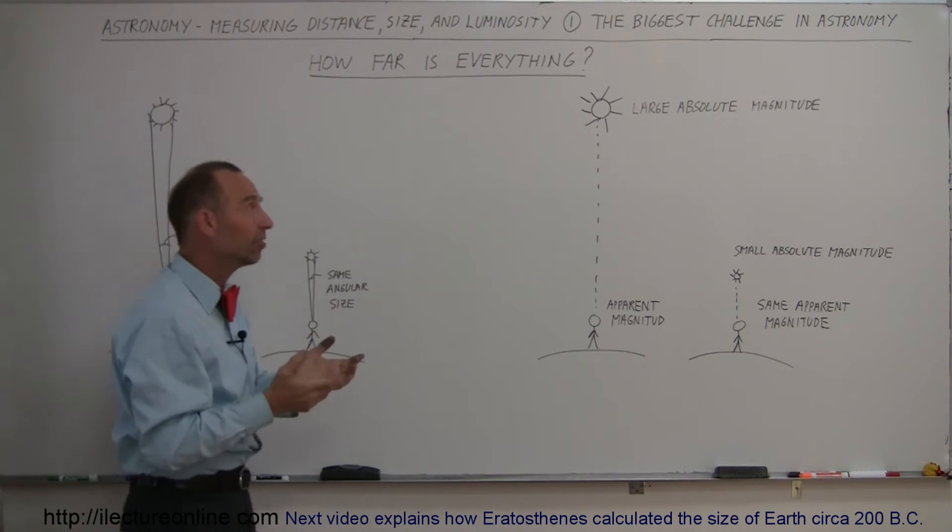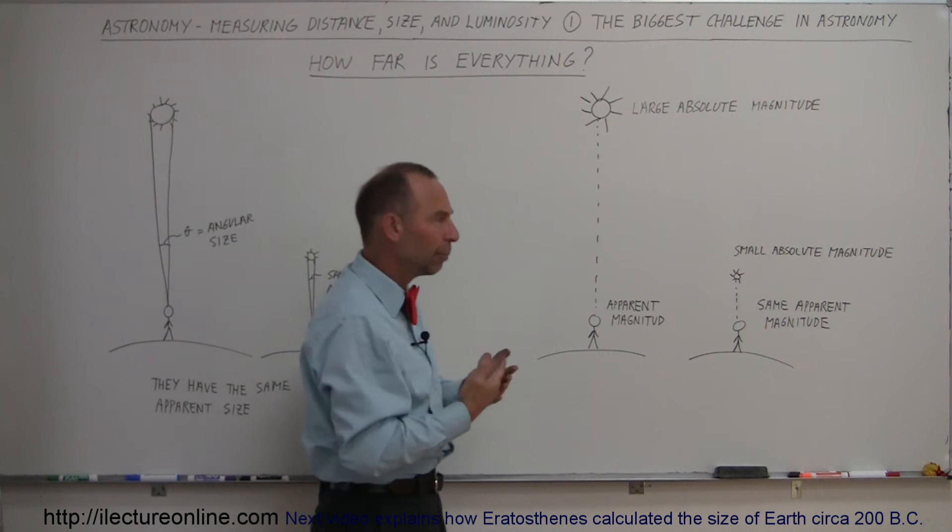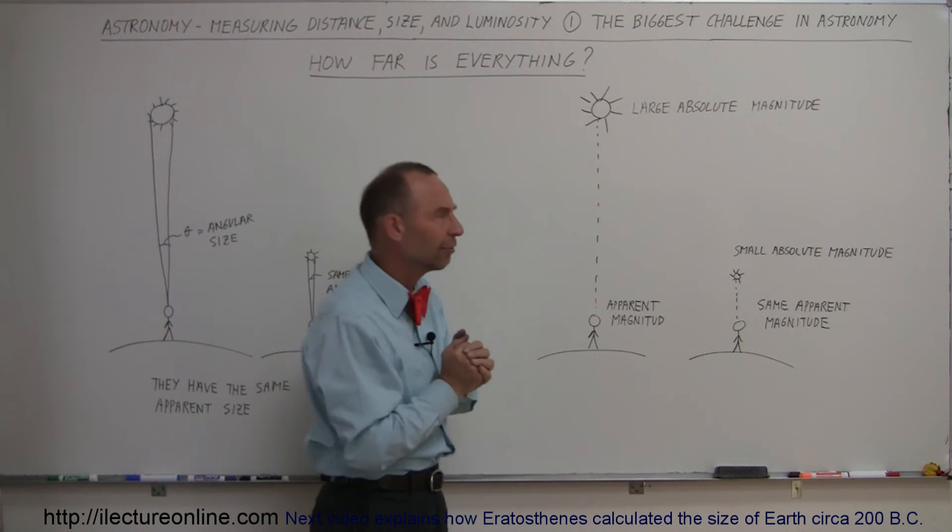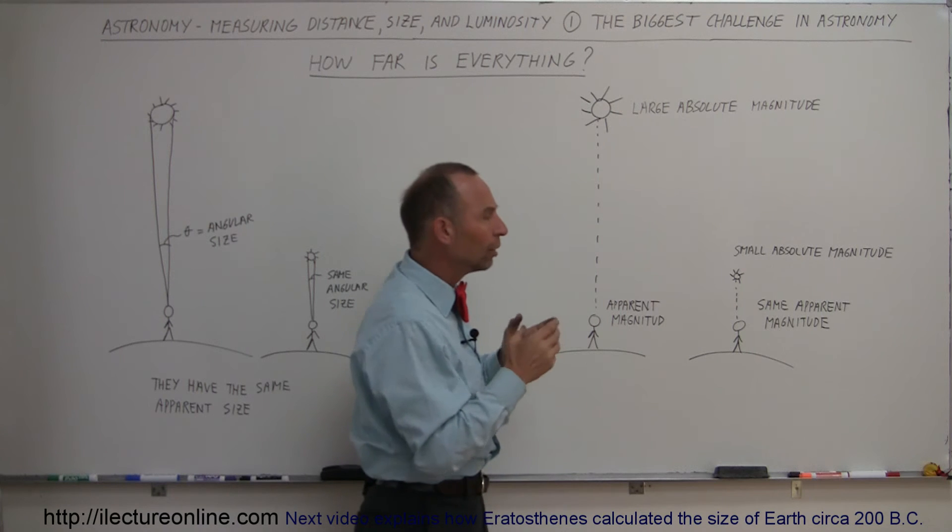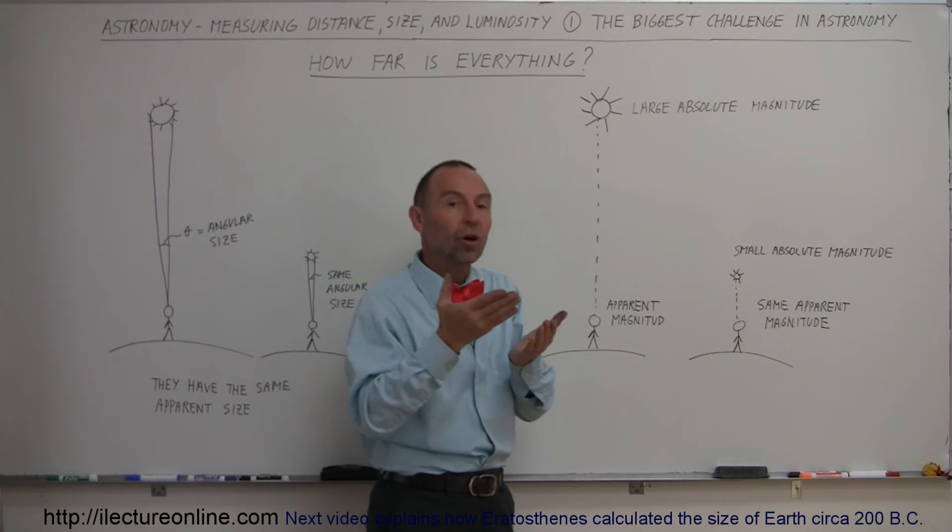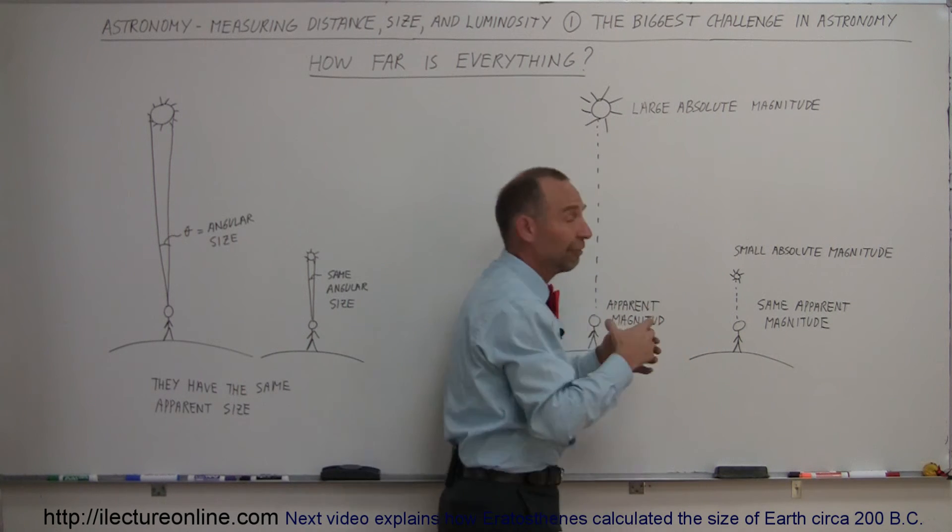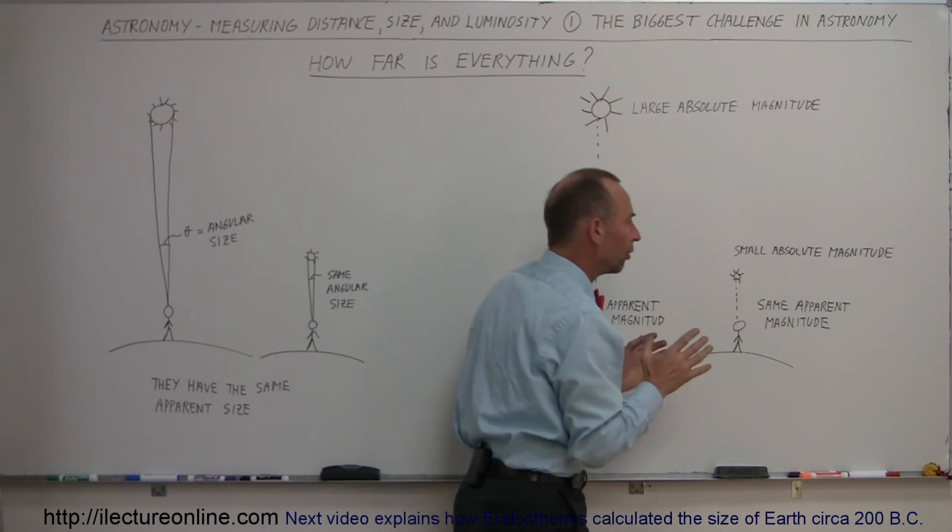Here's another example. Let's say that we have a really bright star. Usually stars are bright, in part because they're very large, but also in part because they're very hot, and we'll see that in a later video. Here's a much smaller star, and so the brightness ascribed to a star is considered what we call the absolute magnitude. So this is indeed a very bright star. It has a very large absolute magnitude. This is a smaller star. It has a much smaller absolute magnitude.